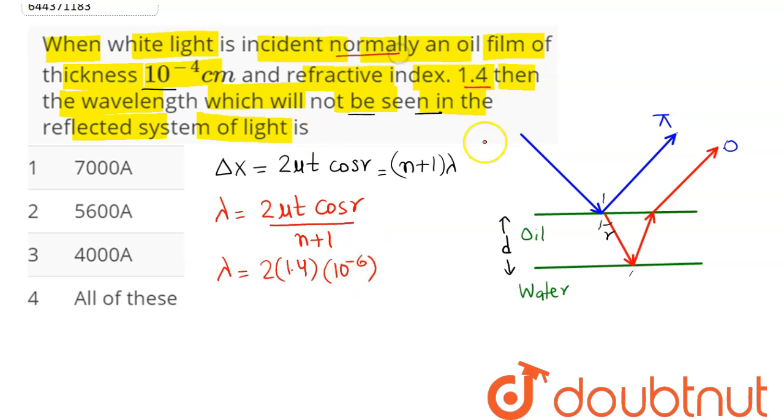Since it is incident normally, angle of incidence is 0, hence refraction angle will also be 0. So this is cos 0° divided by (n+1). Hence lambda comes out to be 2.8 × 10^-6 divided by (n+1).